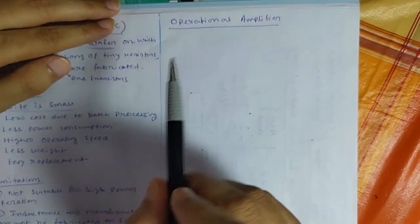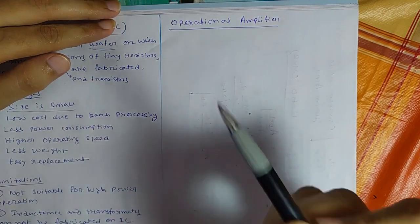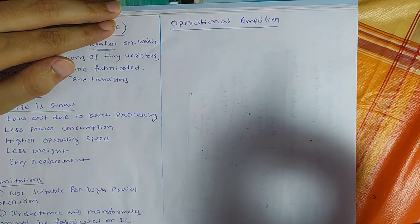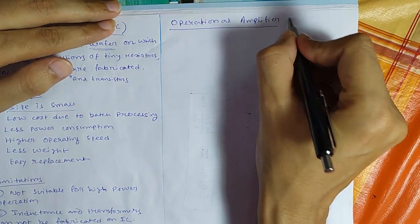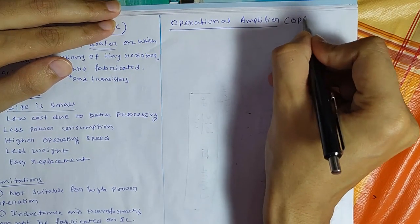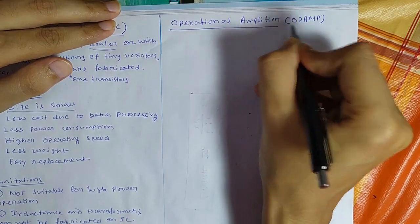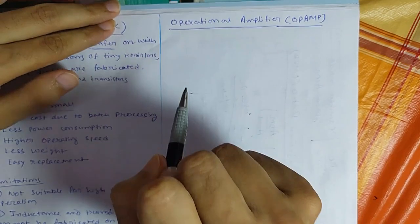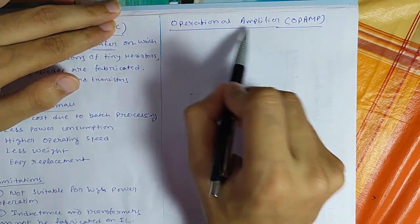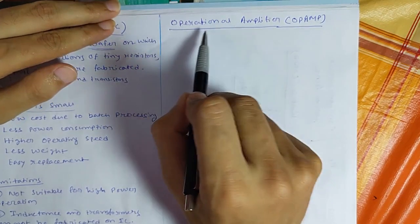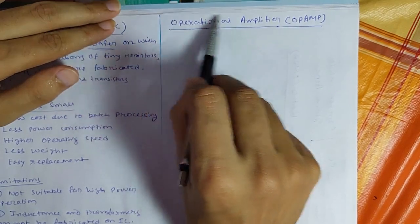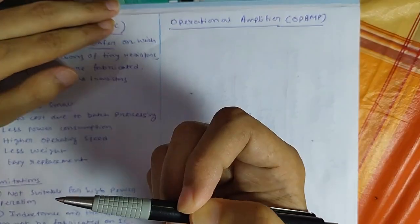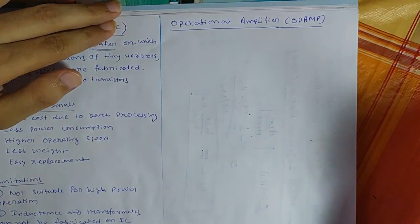One important IC we are going to learn is operational amplifier. In short it is also known as OPAMP. Now why it is named as operational amplifier? Because it is an amplifier, a differential amplifier and operational means it can perform different kind of arithmetic, analogical operation.